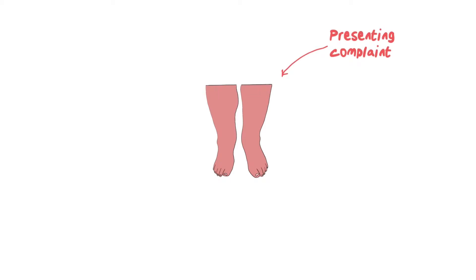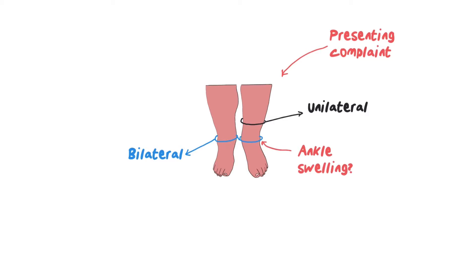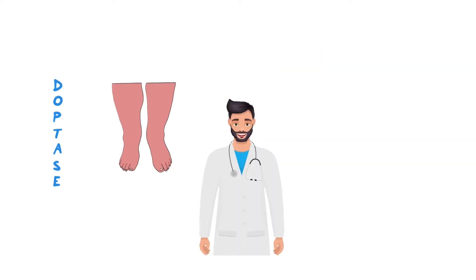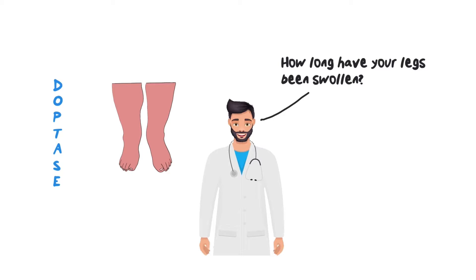It's very important to know which limb or which leg is affected by the swelling — could be one leg (unilateral) or both legs (bilateral). If you want to go into further detail, ask whether the swelling is mainly around the ankles, the calf itself, or both. It's also important to ask the patient how long they've had the symptoms, covering both duration and onset.